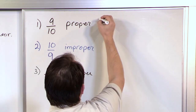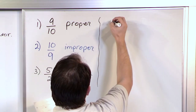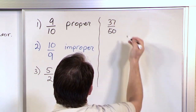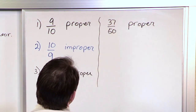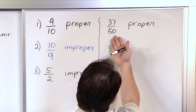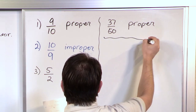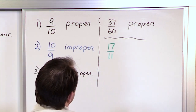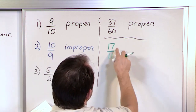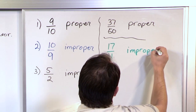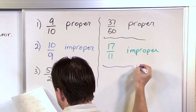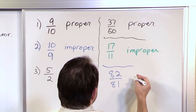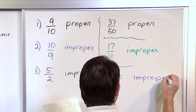This works the same with big or small numbers. Thirty-seven over fifty: the top number is smaller, so this is proper — you cut a pizza into fifty slices and only take thirty-seven, so you have less than a whole pizza. Seventeen over eleven: I have more pieces than I originally cut, so the top number is bigger — this is improper. And finally, eighty-two over eighty-one: it doesn't matter how close the numbers are — the top number is bigger, so this is improper.